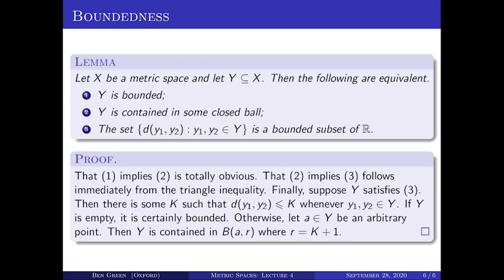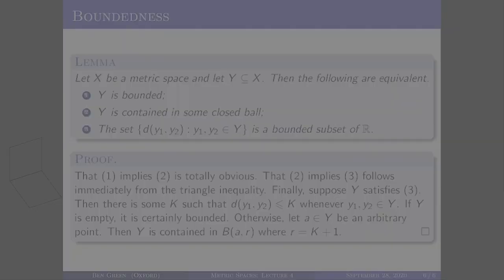So that's a simple lemma about equivalent ways of phrasing the notion of boundedness, and that's the end of chapter one of the course, in which we introduced the notion of metric space, looked at a number of examples, discussed some simple constructions for producing new metric spaces from old ones, and finished by introducing some basic nomenclature for objects in metric spaces.